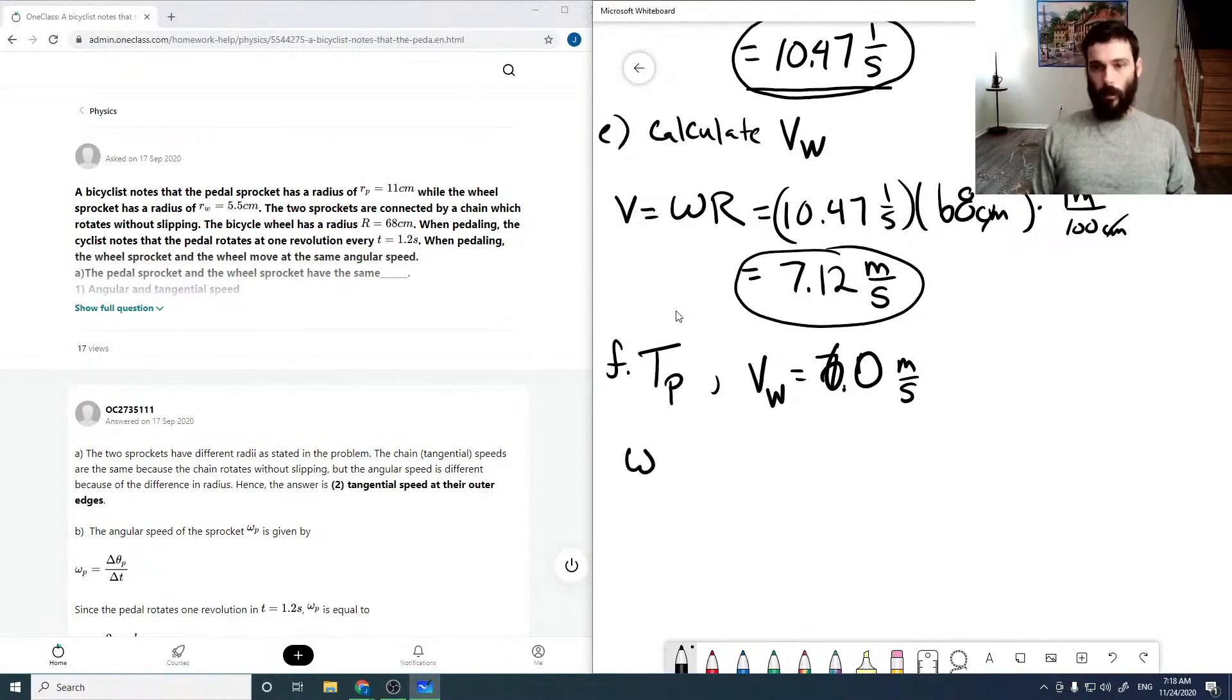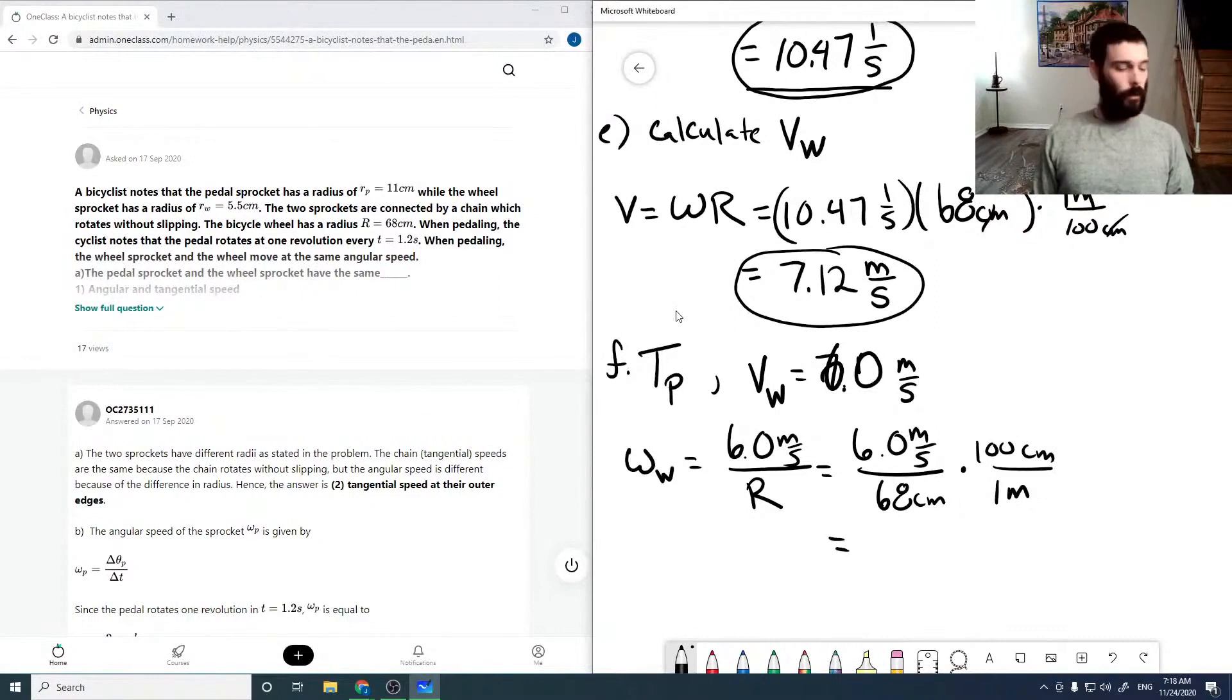So that means our omega for our wheel would be 6 meters per second over our radius, which is 6 meters per second over 68 centimeters, multiplying by the appropriate conversion. And running this through our calculator, we get 8.824, 1 over seconds.